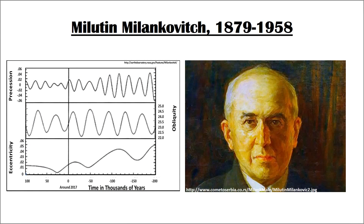Milutin Milankovitch was a Serbian engineer. During the 1930s, he worked on a theory of climate based on the variations of solar irradiance received by the Earth. He formulated a comprehensive mathematical model describing the varying cycles of the Earth's orbit around the Sun. Milankovitch noticed that these cycles correspond to many indicators of past climate change, such as past ice ages. He therefore proposed that changes in the intensity of solar irradiation received on the Earth were affected by three fundamental factors. These factors are now collectively known as the Milankovitch cycles.